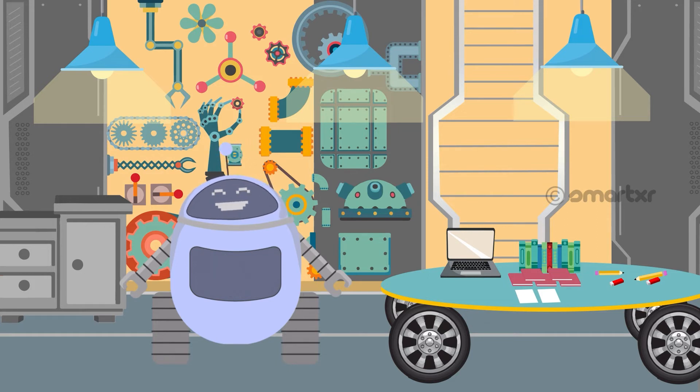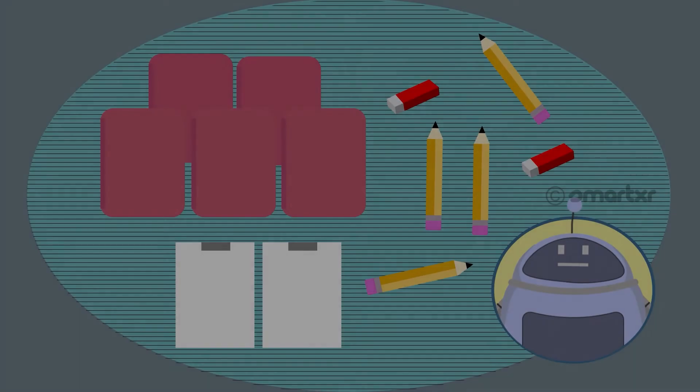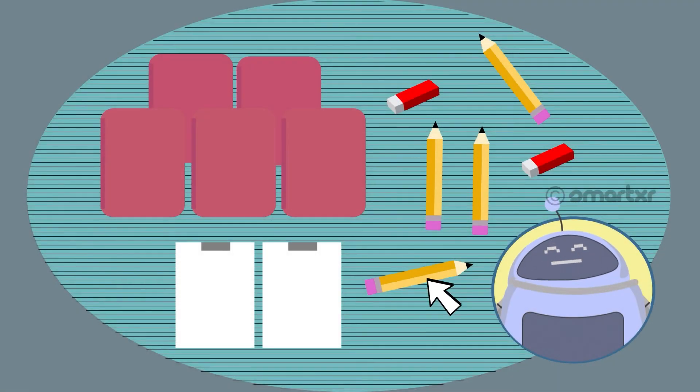Should we use the bigger box for the pencils or the erasers? Let's count them and then decide. This is pencil number one. This is pencil number two. This is pencil number three.